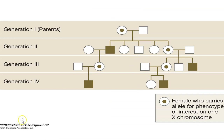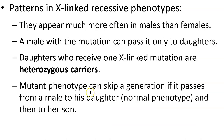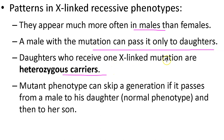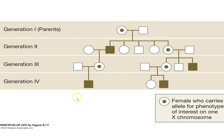Reviewing again about sex linkage: these patterns appear much more often in males. A male with a mutation can only pass it to daughters, because his son gets the Y. Daughters who receive the mutation are carriers — only one X-linked mutation. Looking at the pedigree, he passes it to his daughter, so every daughter this affected male has will be a carrier. All the circles in this pedigree are carriers.